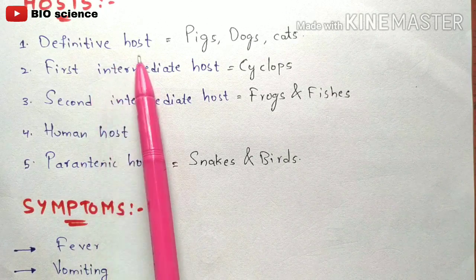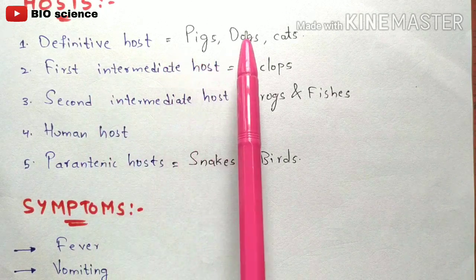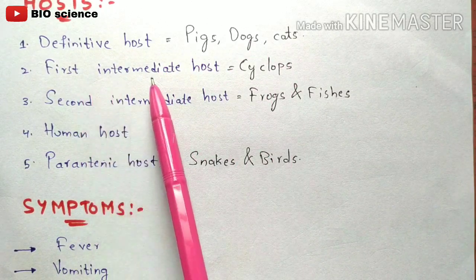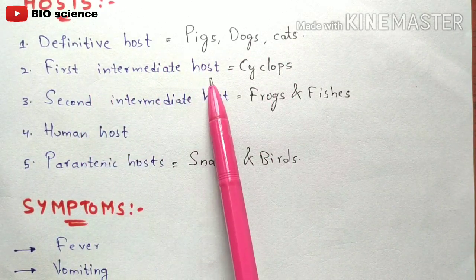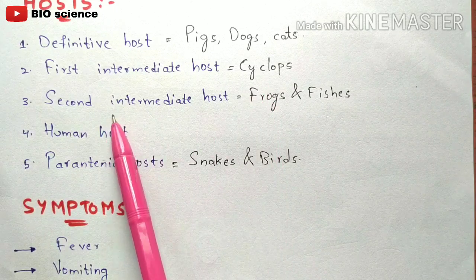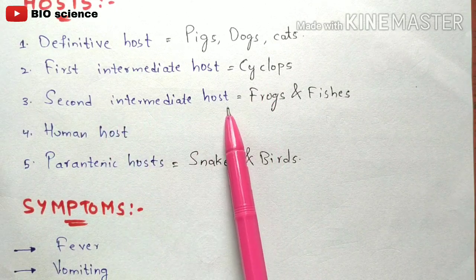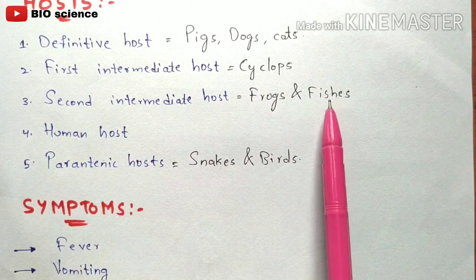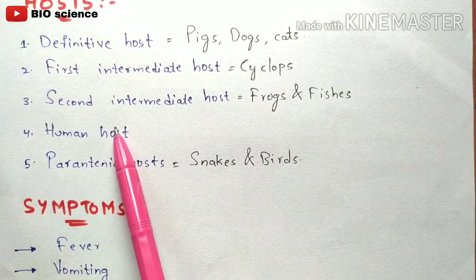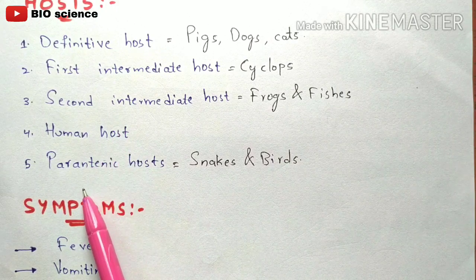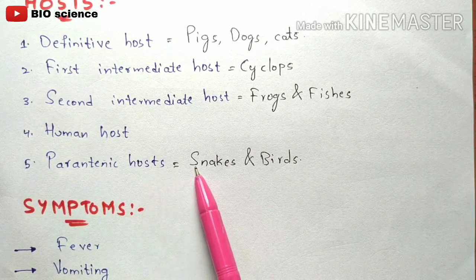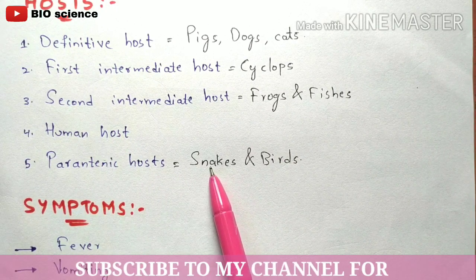To summarize the host examples: definitive hosts — pigs, dogs, cats; first intermediate hosts — Cyclops; second intermediate hosts — frogs and fishes; human host — human beings; paratenic hosts — snakes and birds.